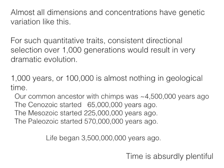Almost all dimensions and concentrations — like the concentration of protein in corn or sugar in eggplant — have this kind of genetic variation and heritability. For such quantitative traits, consistent directional selection over 1,000 generations would result in very dramatic, noticeable evolution. That's only 1,000 years for organisms that reproduce annually, or 100,000 years for organisms with a 100-year generation time — and either is almost nothing in geological time.